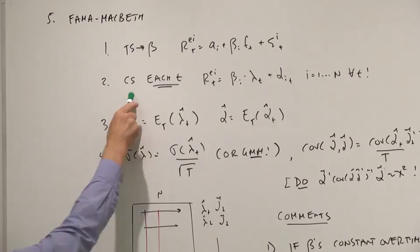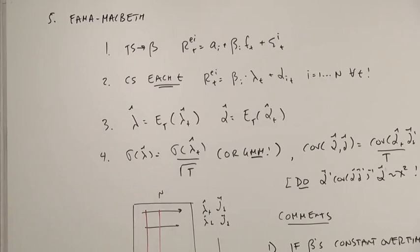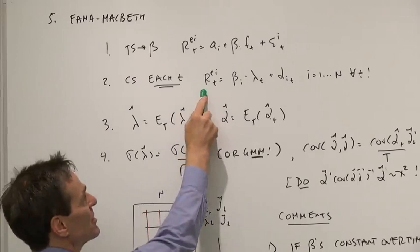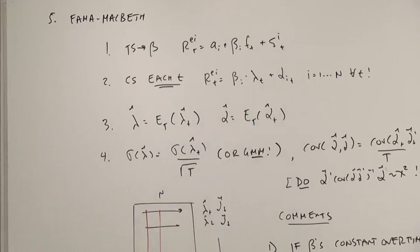Now we're going to do something different. We're going to run a cross-sectional regression at each time. Indeed, if you have 700 data points, you're going to run 700 different cross-sectional regressions. The actual return on the beta, getting a different factor risk premium for each time period and a different error for each time period.